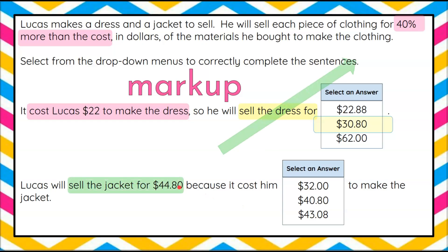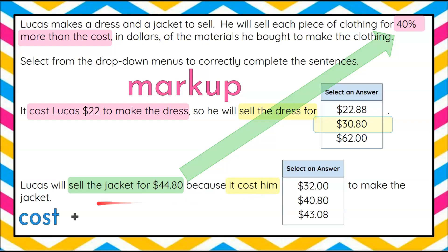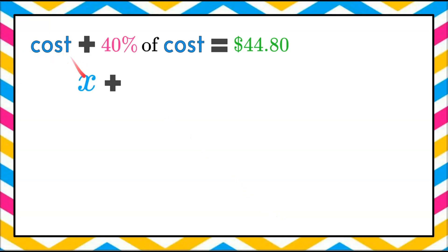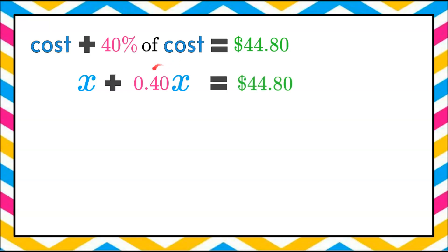Welcome back. Lucas is selling a jacket for $44.80, which is a 40% markup, and we want to determine what it cost him to make the jacket. The cost of his materials plus 40% of the cost — his markup — equals $44.80. If we let the cost be x, then x plus 0.40 times x equals $44.80.